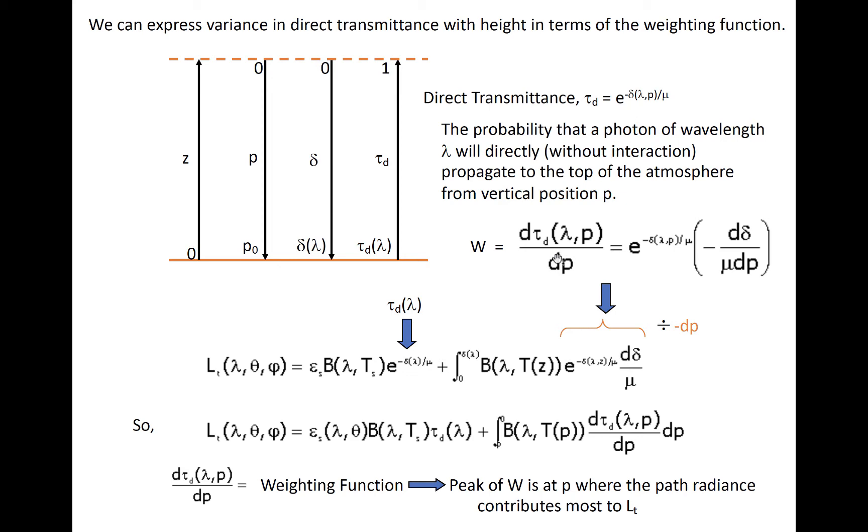If we take the derivative of direct transmittance with respect to pressure, we get an expression that contains an additional coefficient of one over mu and the vertical derivative of optical depth. If we take the below expression for Schwarzschild's equation and do a little bit of algebra, we can replace the exponential in the second term with the weighting function W, which is dτ/dp. And the weighting function tells us the relative contributions of emissions for various pressure levels to the top of atmosphere radiance.